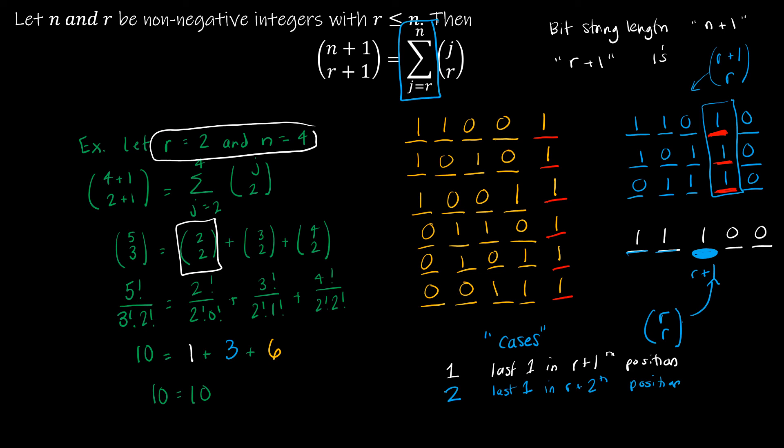Ones, sorry, r ones. That denotes the 3 choose 2.